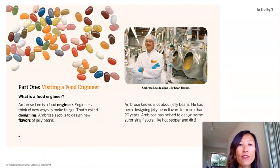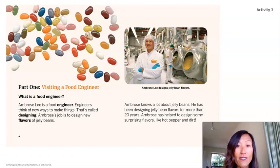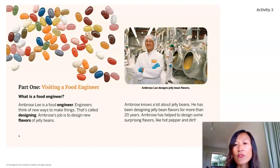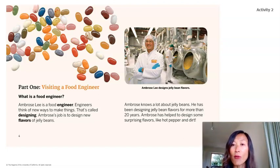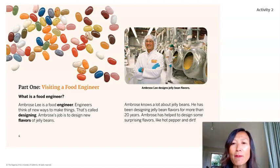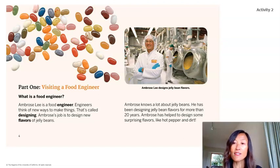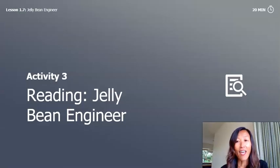Part 1 — Visiting a Food Engineer. What is a food engineer? It says Ambrose Lee is a food engineer, and engineers think of new ways to make things — that's called designing. Ambrose's job is to design new flavors of jelly beans. He has been designing jelly beans for more than 20 years and has helped design some surprising flavors like hot pepper and dirt. The caption says 'Ambrose Lee designs jelly bean flavors.' My prediction was right — we're learning about flavors and ingredients.